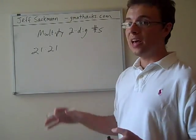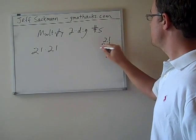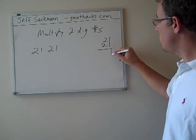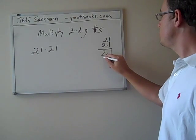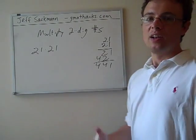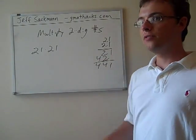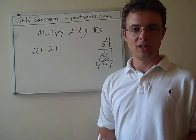If you were to solve for that the old-fashioned way, you'd probably set up something like this. You'd do 1 times 1, 1 times 2, 1 times 2, 2 times 2. Not the worst thing in the world, but it's a lot of steps. It's not very intuitive, even if you did it a million times when you were 11 years old.